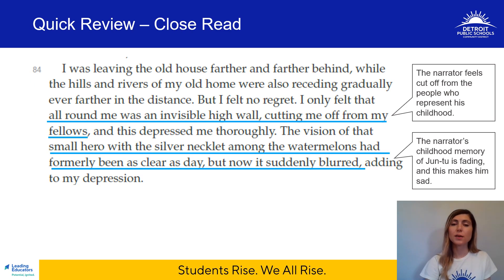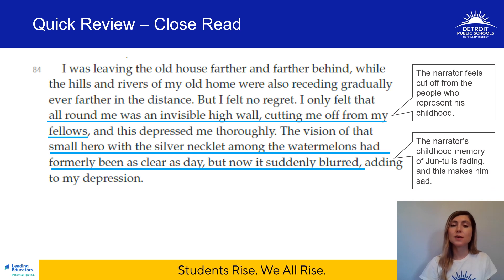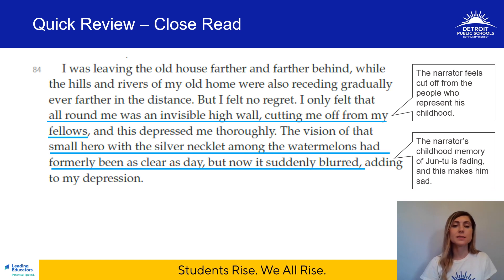Here's a quick review of that close read. I'm going to give you an example from my close read of paragraph 84. I lifted up these lines: 'all around me was an invisible high wall cutting me off from my fellows.' I'm trying to capture the narrator's feelings, and these lines tell me that he feels cut off from the people who represent his childhood — he's almost invisibly boxed in, and this depresses him thoroughly.